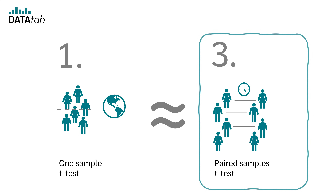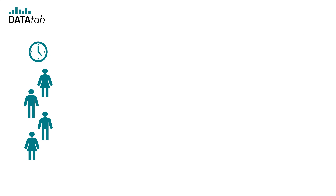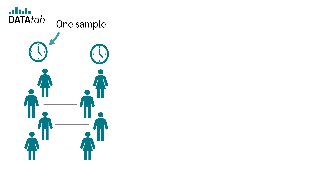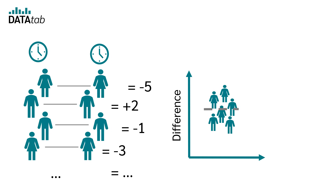The paired samples t-test is very similar to the one-sample t-test. We can think of the paired samples t-test as having one sample measured at two different times. We calculate the difference between the paired values — for example, minus 5, plus 2, minus 1, and so on — giving us a single sample of differences. We then test whether the mean of those differences deviates from a reference value, in this case zero. This is exactly what the one-sample t-test does.